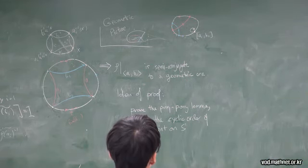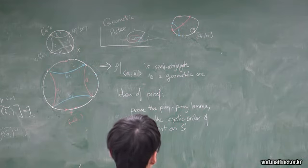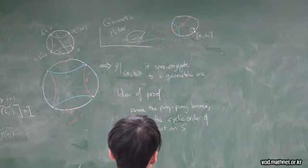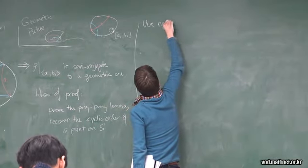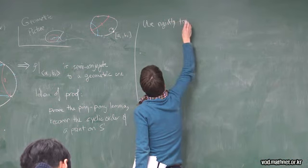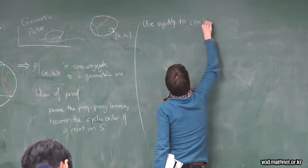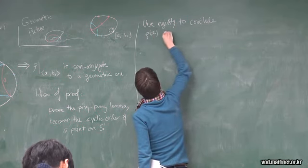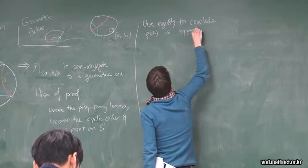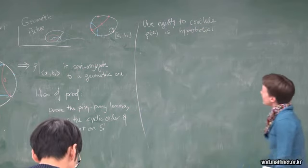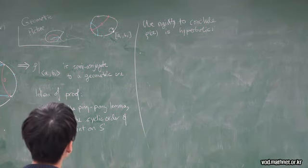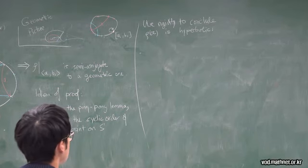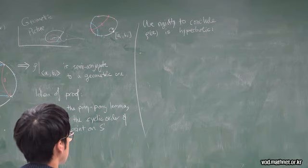So we're going to use this to, well somehow we have to use rigidity, I haven't used rigidity yet. We're going to use rigidity now to conclude that rho of A is actually hyperbolic. Rigidity is the statement that if I deform my action, in particular if I continuously deform it, all I've done is a semi-conjugacy, I haven't changed it at all.